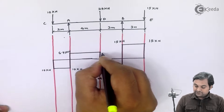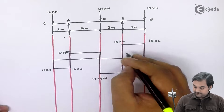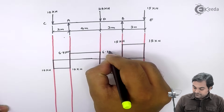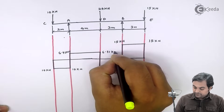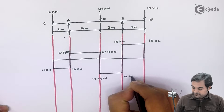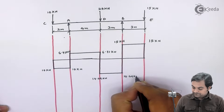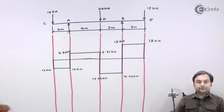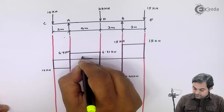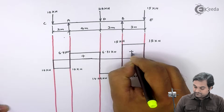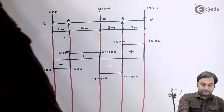So here is the shear force diagram. The values are: 10 kN, 6.71 kN constant, 17.29 kN, and 15 kN constant. Positive sign is above the line and negative is below the line.